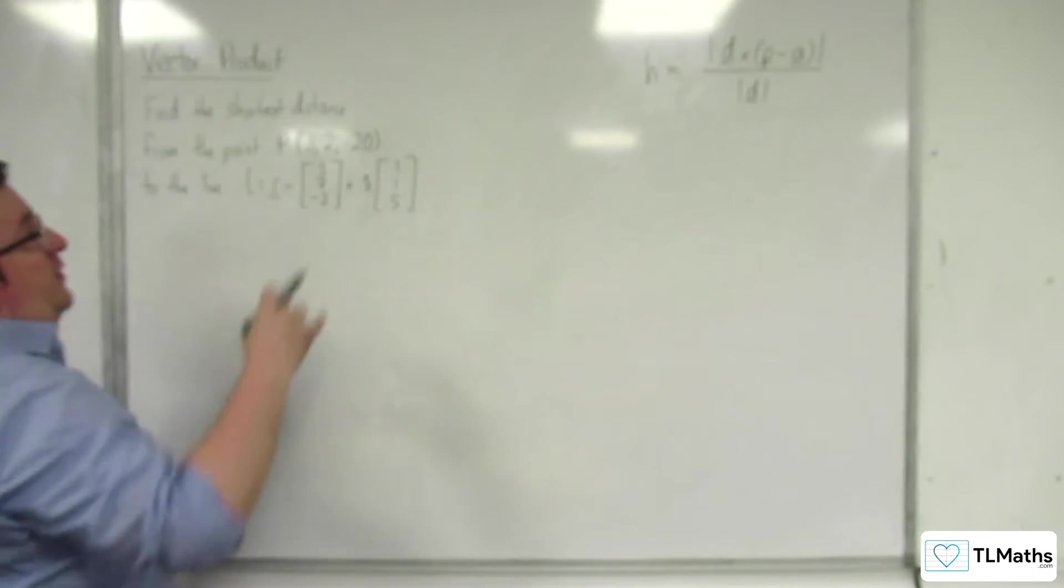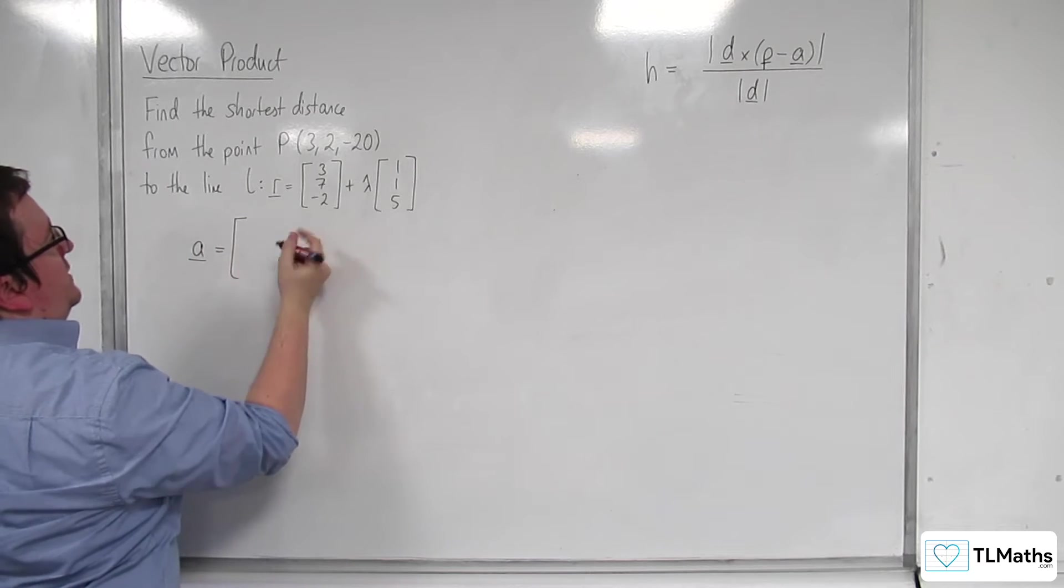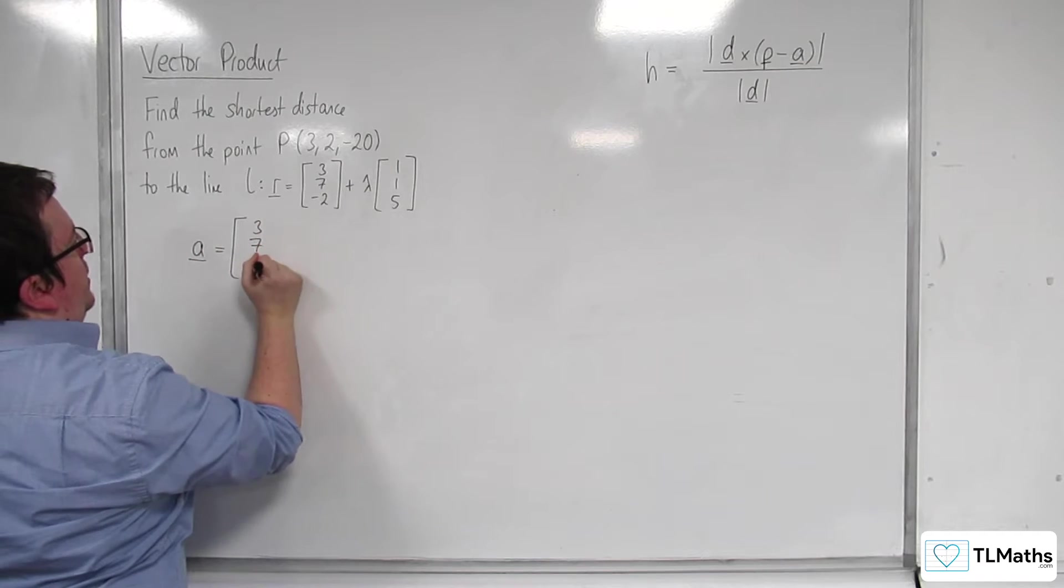The first thing to do is identify the pieces. A is the position vector of the line, so (3, 7, -2).